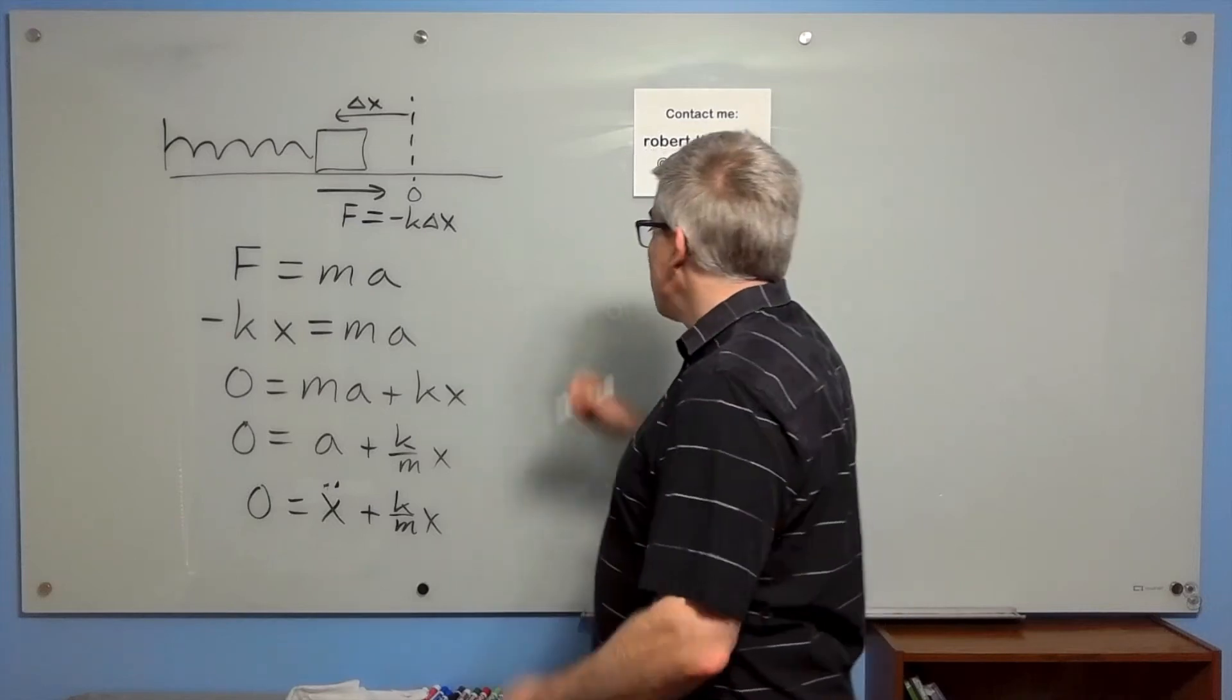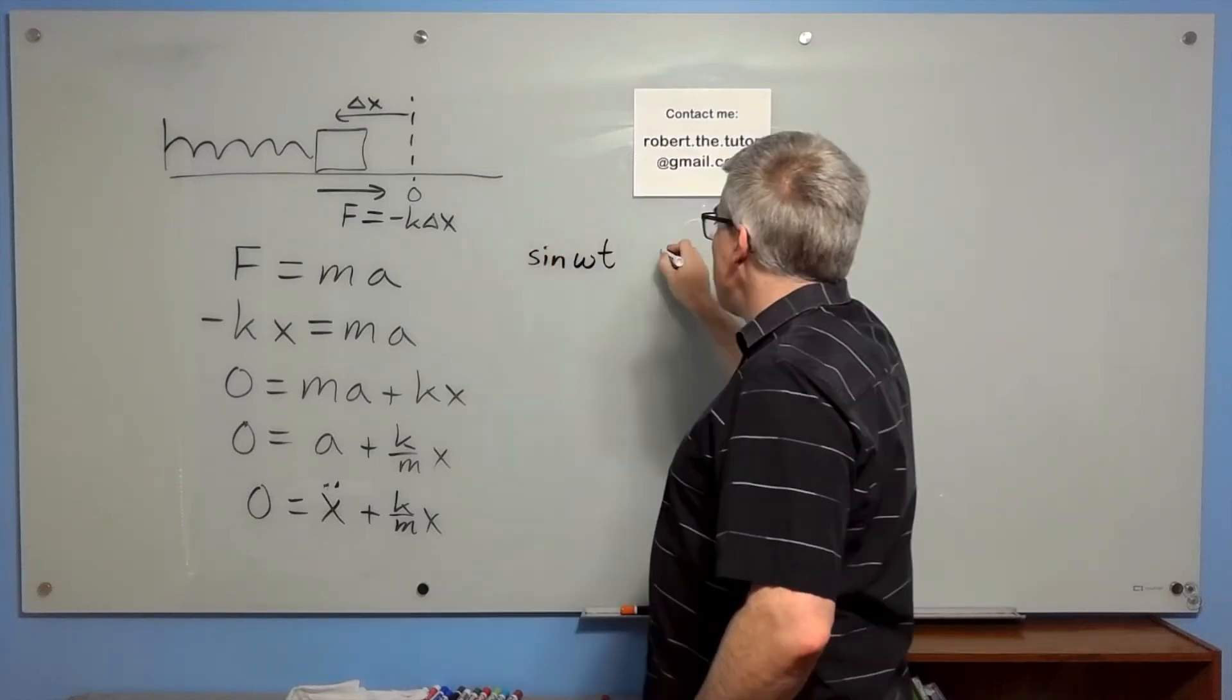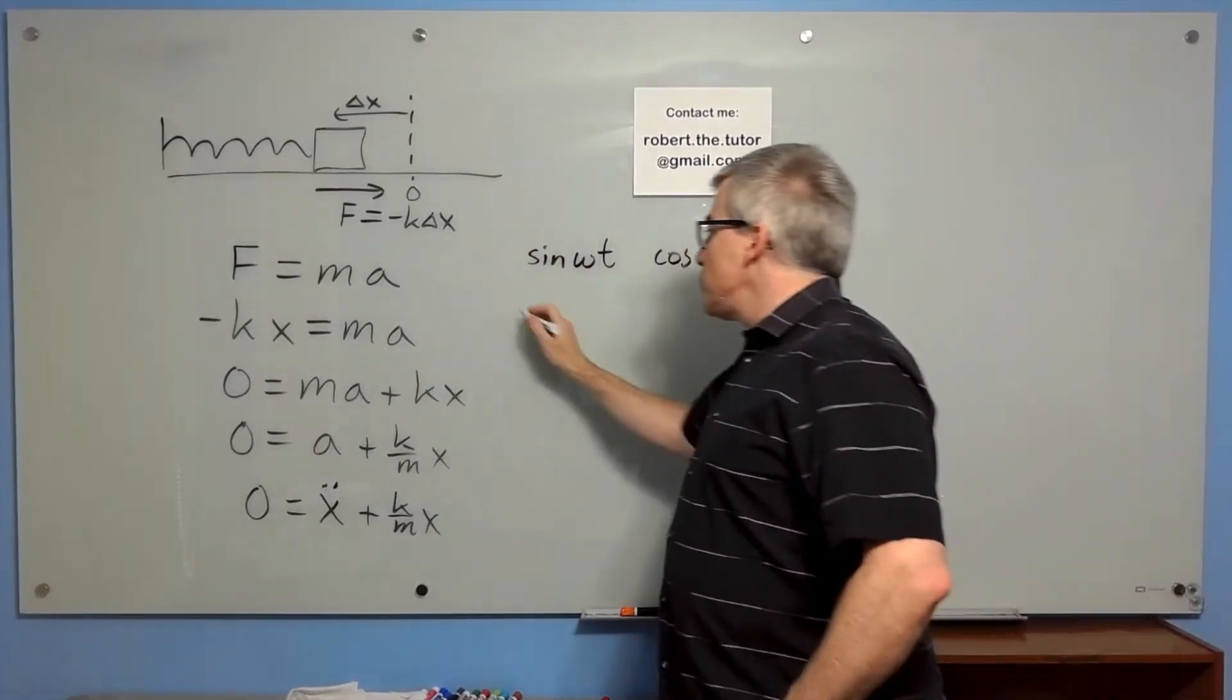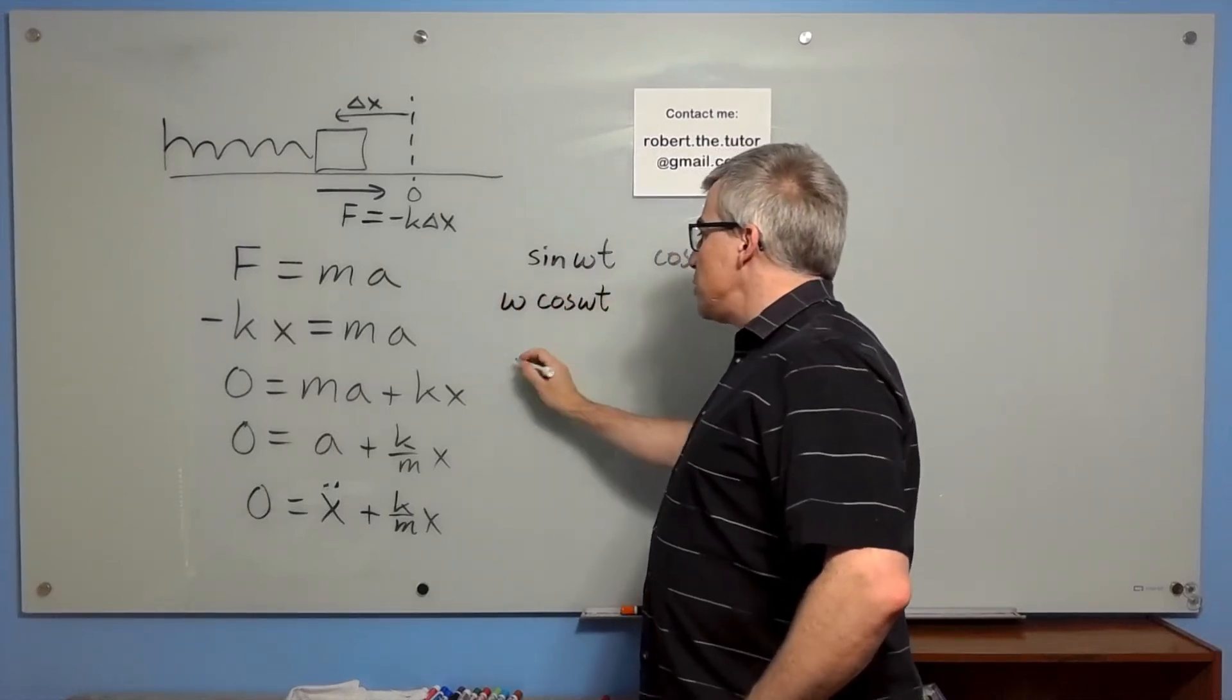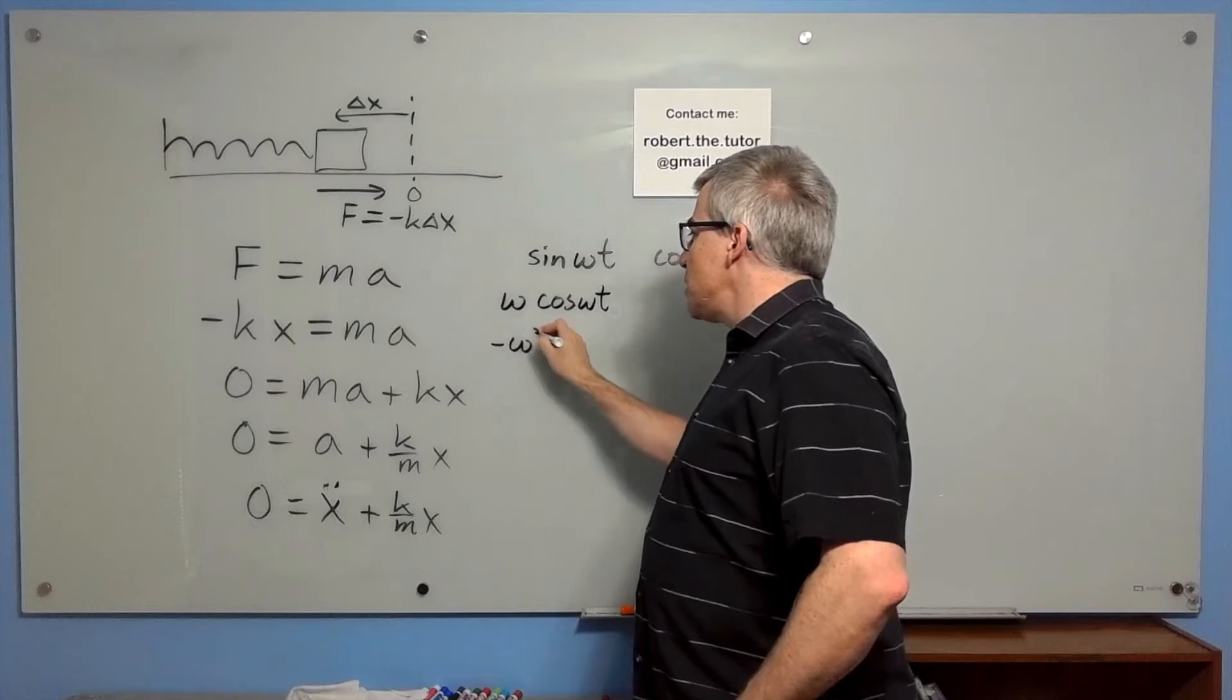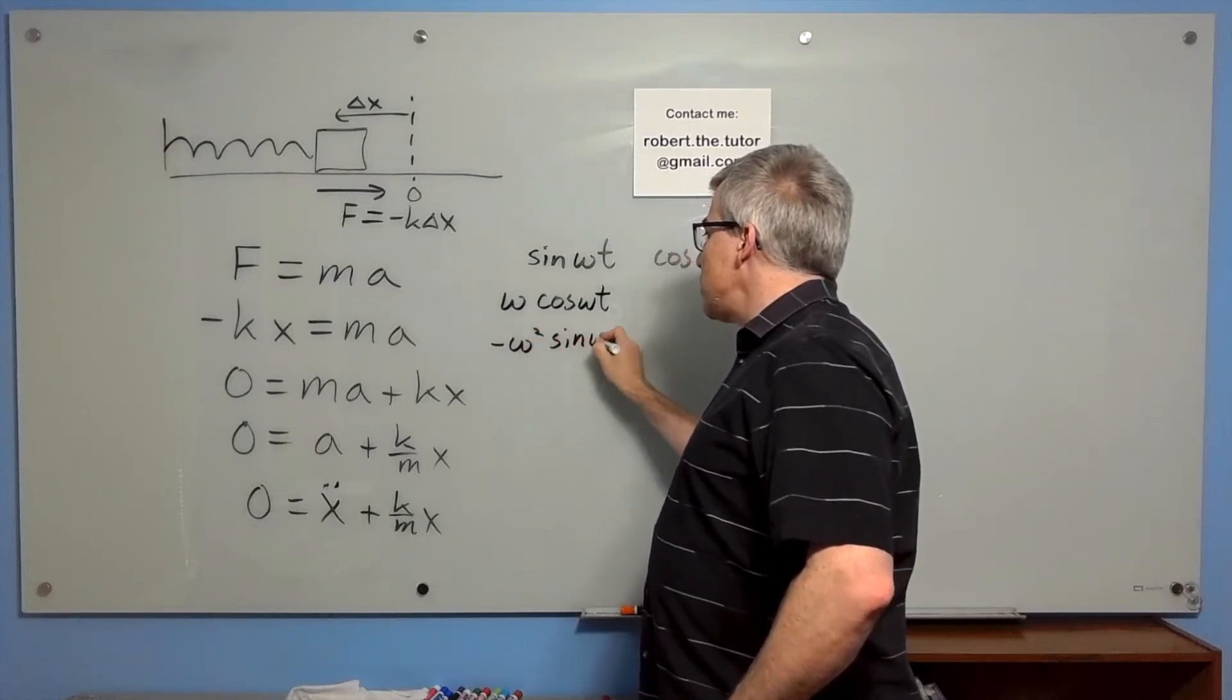Two functions that have that property are sine and cosine. Because the derivative of sine omega t is omega cosine omega t. And the derivative of that is minus omega squared sine omega t.